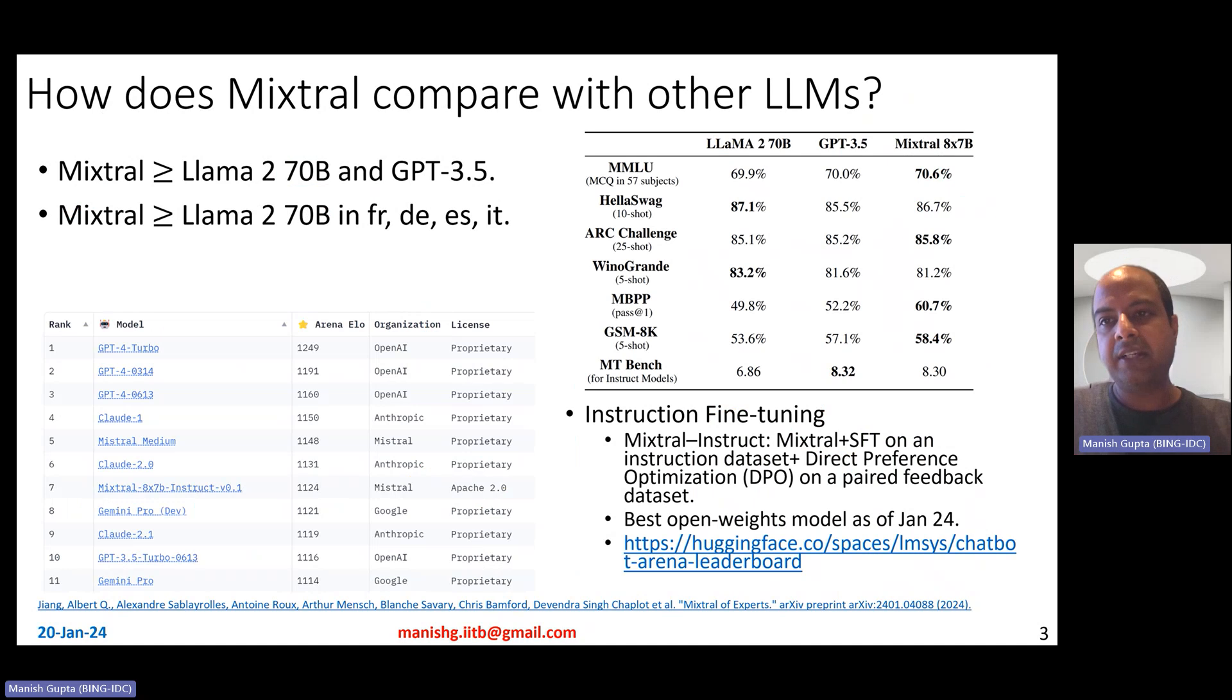Now, how does Mixtral compare to other LLMs? So if you compare it with Llama 2 70 billion we already compared in the previous slide, but if you even compare it with GPT 3.5, Mixtral is superior across several different benchmarks. So Mixtral can actually support multiple languages. So Mixtral is not just better than Llama 2 70 billion and GPT 3.5 in English, but actually is way better compared to Llama 2 70 billion even in other languages like French, German, Spanish, Italian, and even in code generation.